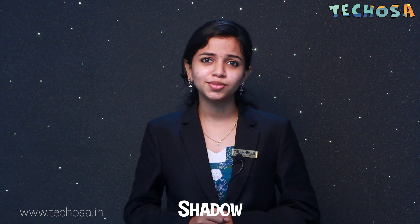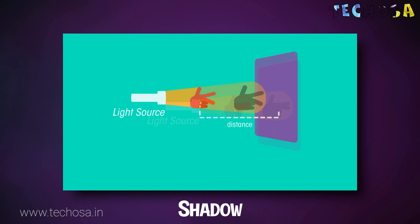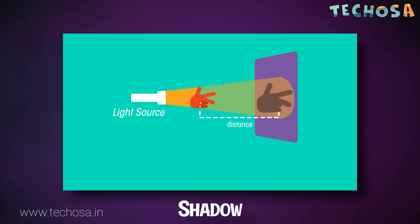So what if there is no light? The absence of light produces shadow. Shadows are created when an opaque object blocks the light source. Shadows change depending on the distance of the object from the light source and the position of the light source. Light appears to travel in a straight line, traveling from the light source until it hits the surface of an object.